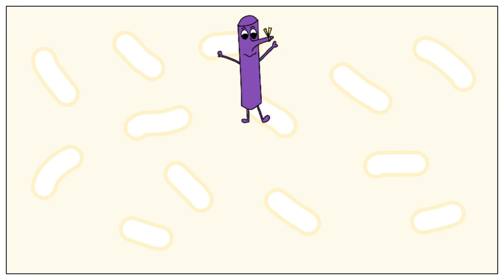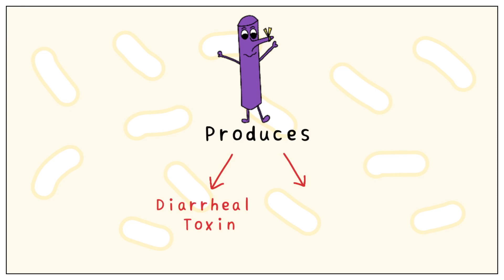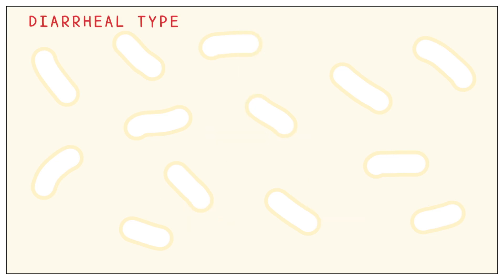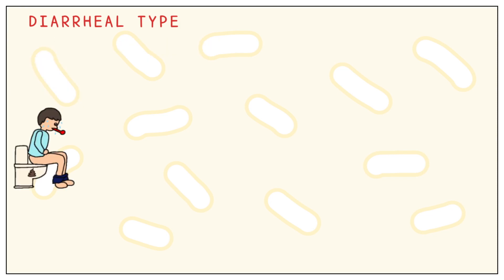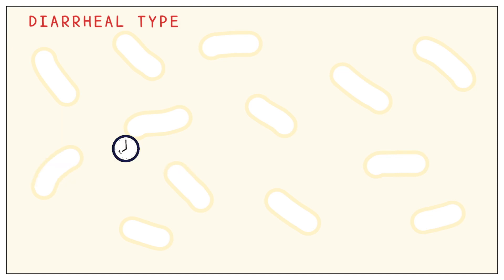Bacillus cereus produces two types of toxins: a diarrheal toxin and an emetic toxin. The diarrheal type is found in foods such as vegetables, meat, and cereals. This causes diarrhoea, as we know from the name, and fever. Its incubation period is 8 to 16 hours, which will cause you to be sick at night or early the next morning.